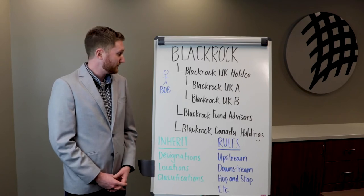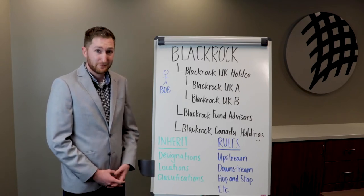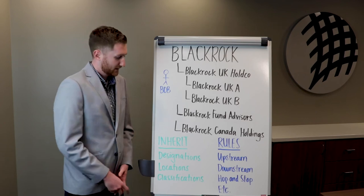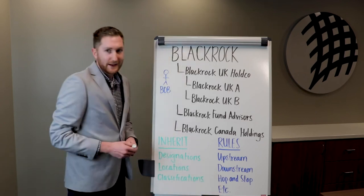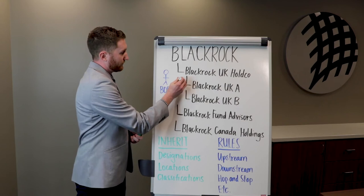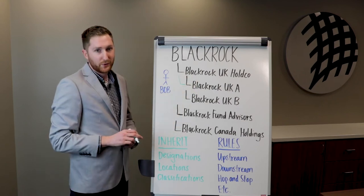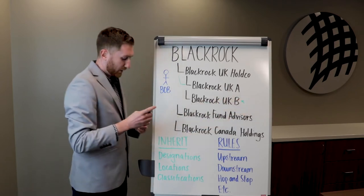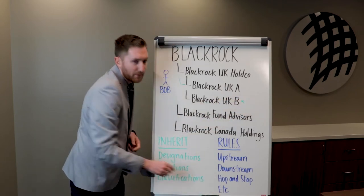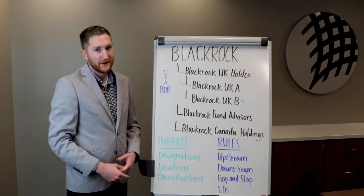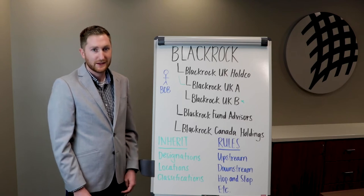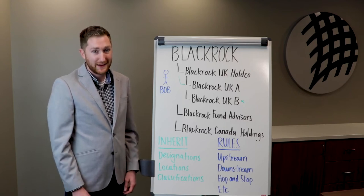Who's that a nightmare for? Bob. Bob's our data administrator for our firm, and it is his sole responsibility to ensure the integrity of the BlackRock hierarchy. That means that if a change occurs to BlackRock's hierarchy, or a specific data point to a specific legal entity within the hierarchy, some sort of action is required by Bob. He has to verify the accuracy of that update and understand how that update impacts the rest of the tree.